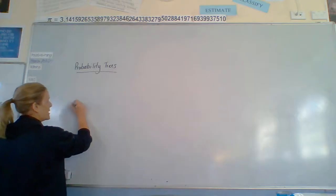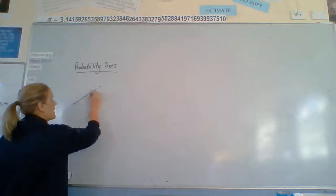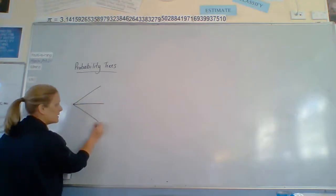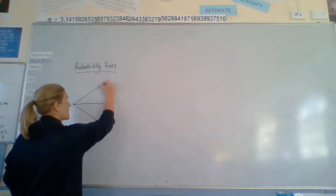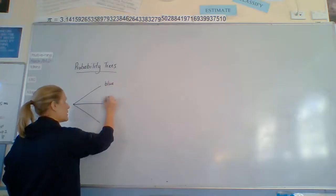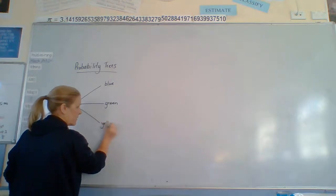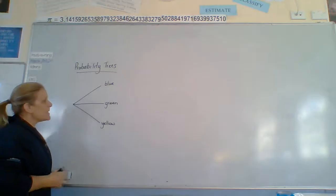Basically, a probability tree starts with a probability of 1. Everything over there is going to happen. When we have our branches, we might have the probability of blue, green, and yellow marbles in a bag.